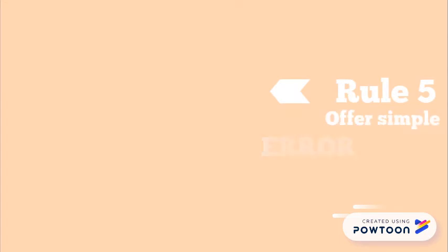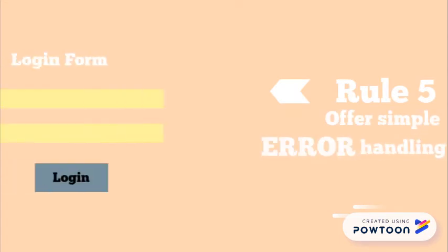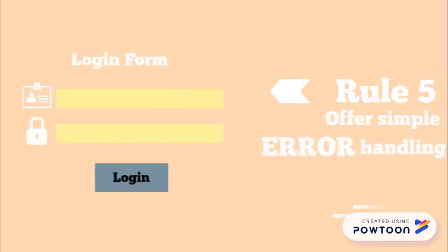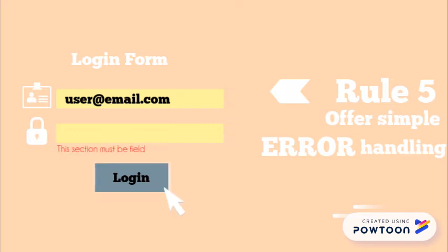Rule number five: offer simple error handling. When errors occur, ensure users are provided with simple, intuitive step-by-step instructions to solve the problem as quickly as possible. For example, flag the text field where the user forgot to provide input in an online form.